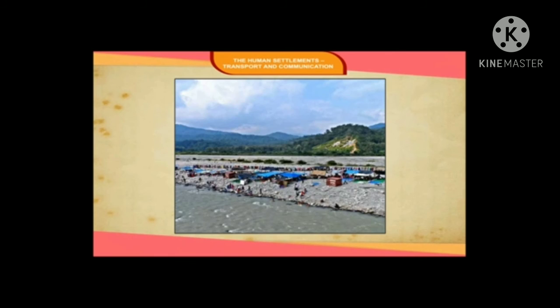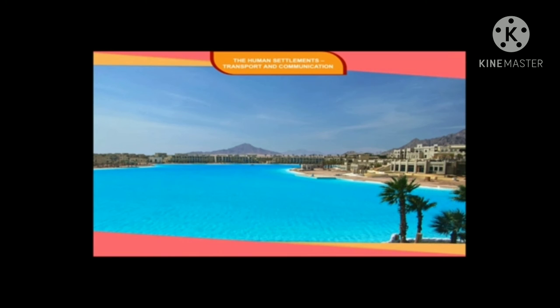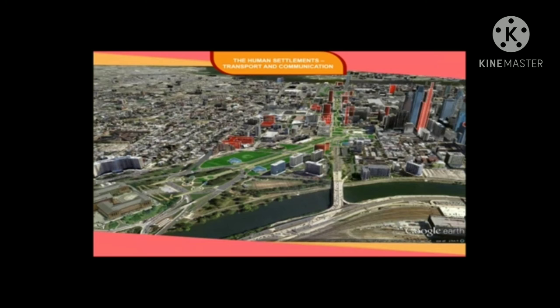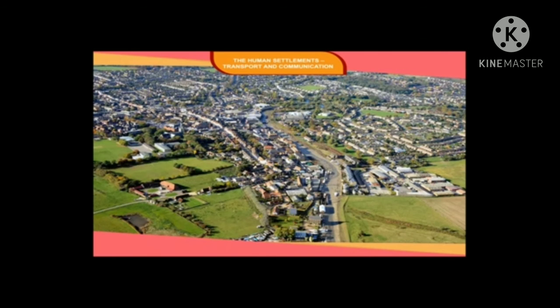Patterns of Rural Settlements: Circular pattern — these generally develop around a lake, pond, or oasis in a desert area. When people settle around such a water body, it takes the shape of a circular pattern. Linear pattern — this type of settlement develops along a highway, railway line, canal, or river, in which all the houses are built in a line. Rectangular pattern — this type of settlement generally develops at crossroads, with houses built side by side leaving lanes and by-lanes.